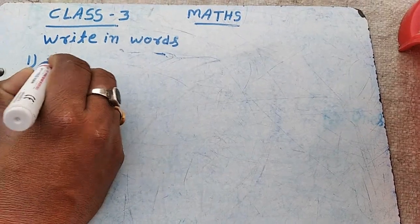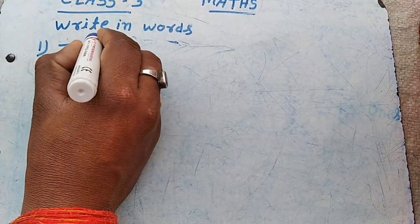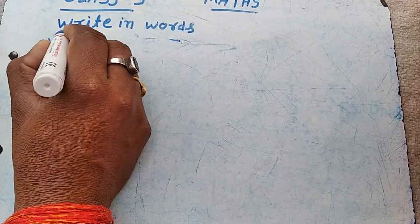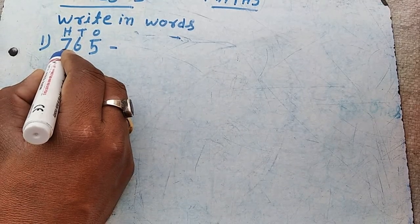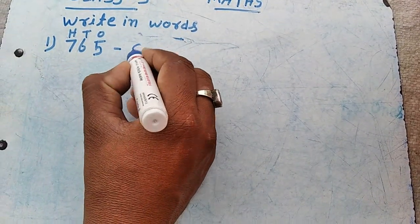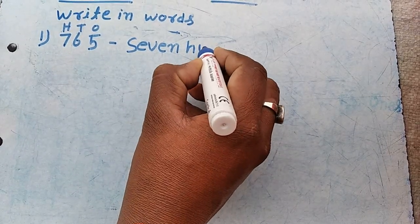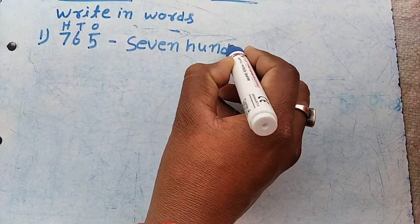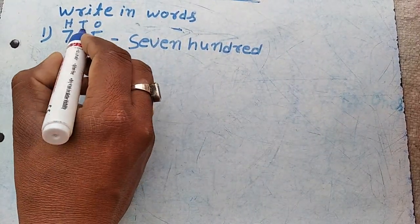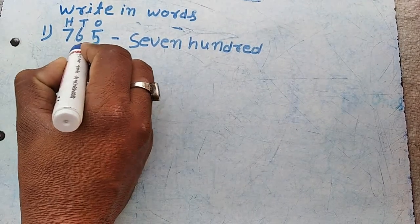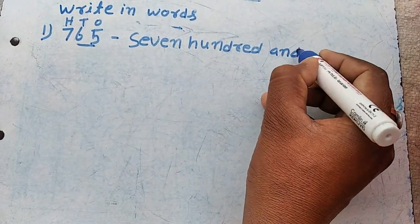Example number one: the number is 765. H stands for hundreds — seven is in the hundreds place, so seven hundred. T stands for tens — sixty-five. So we have seven hundred and sixty-five.